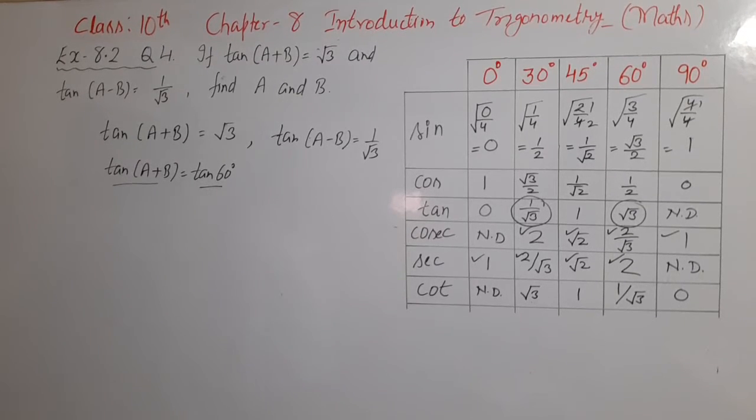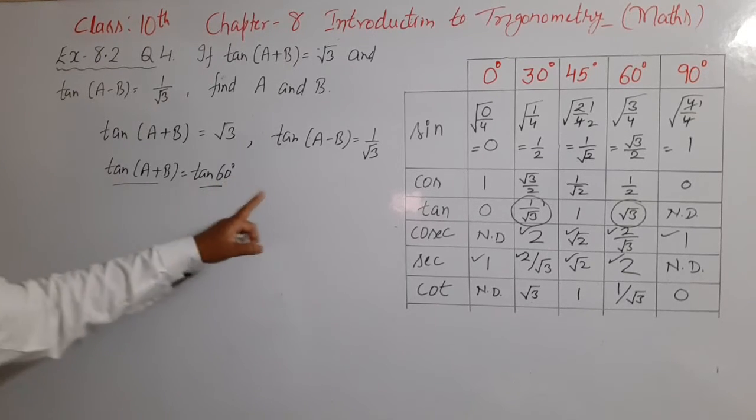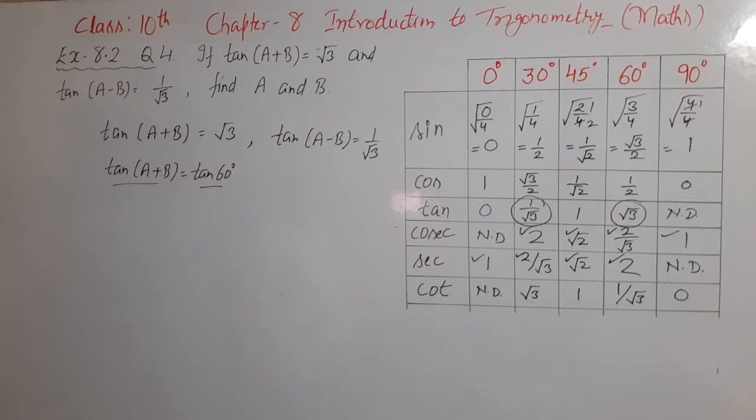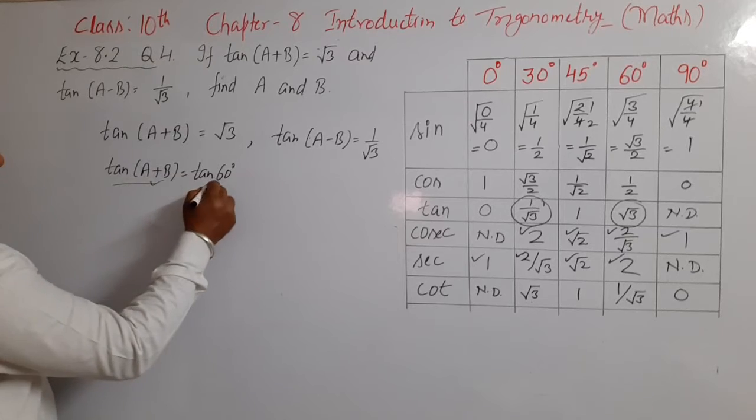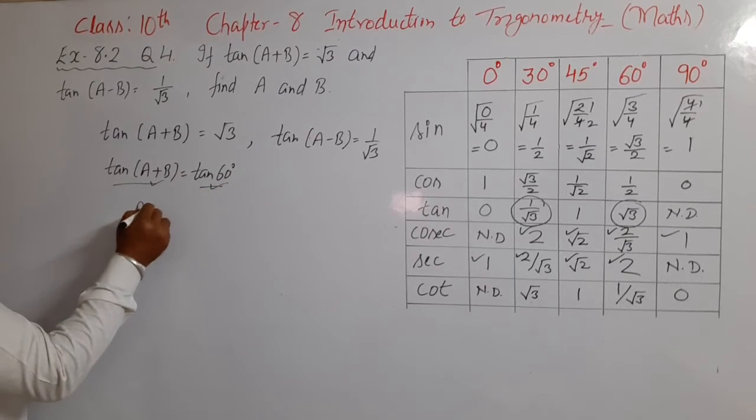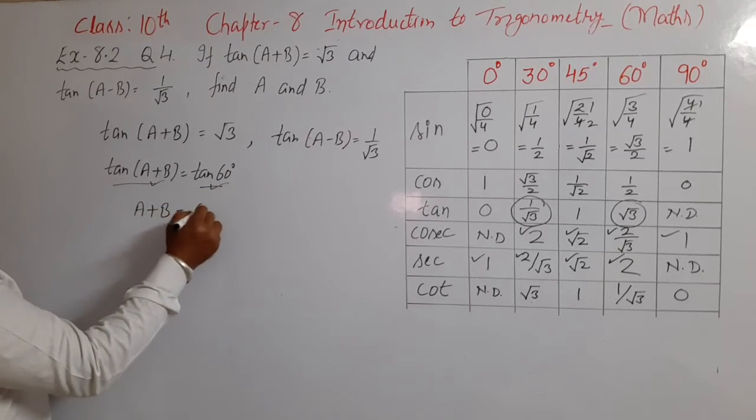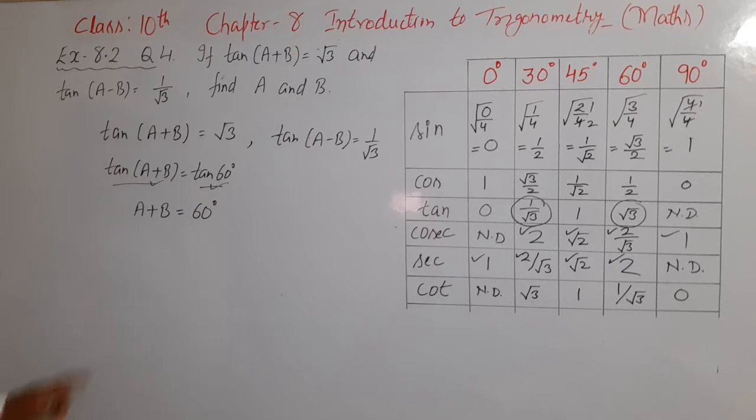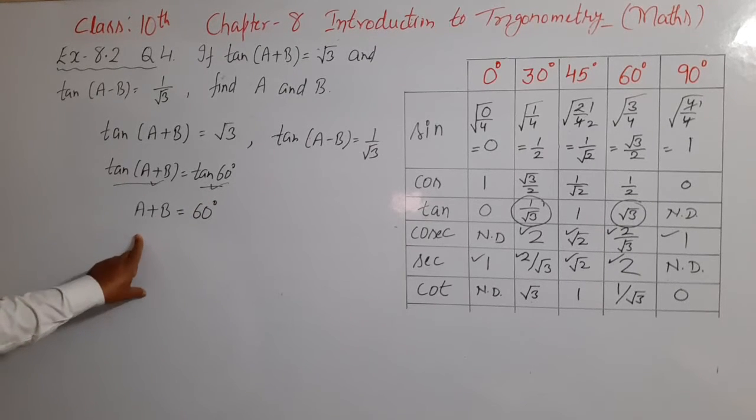Agar ek angle ke tan ki value dusre angle ke tan ki value ke equal hai, yani agar A plus B ke tangent ki value aur 60 degree ke tangent ki value hai, aisa kab possible hai? Aisa tabhi possible hai jab ye dono angles equal ho. That is, A plus B agar 60 degree ka hai, usi case mein tan(A+B) aur tan 60 degree equal ho sakte hain.